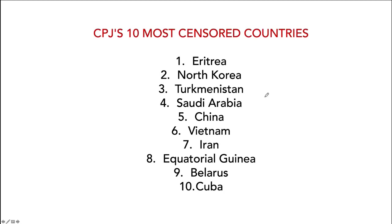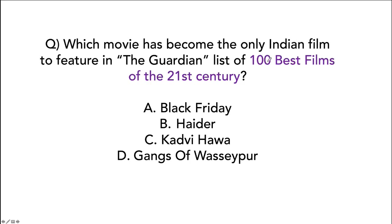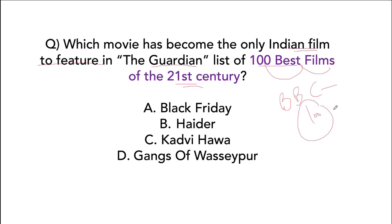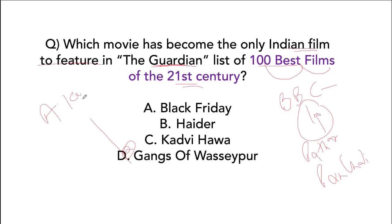The 10 worst countries for being a journalist: worst is Eritrea, second is North Korea, third is Turkmenistan. Which movie has become the only Indian film to feature in the Guardian's list of 100 best films of the 21st century? Only one Indian movie is there — Gangs of Wasseypur, directed by Anurag Kashyap.